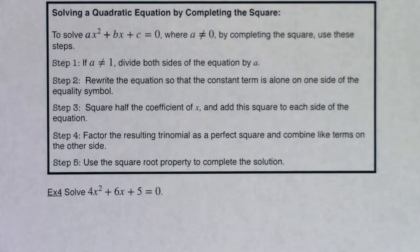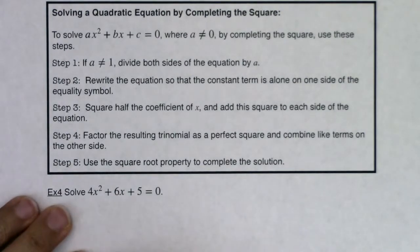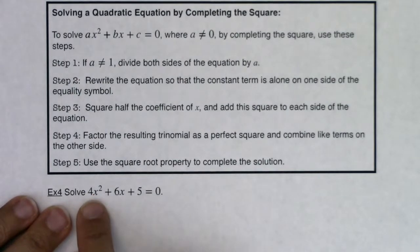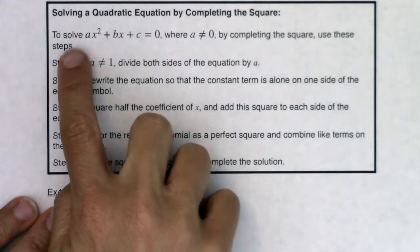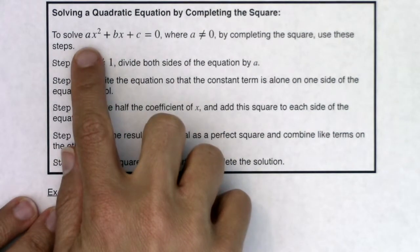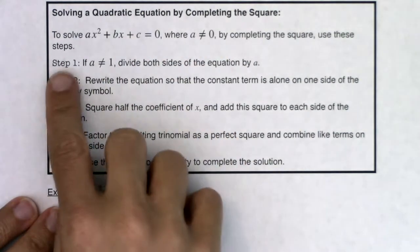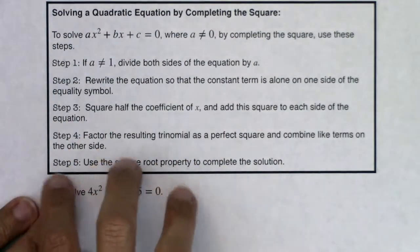Let's take a look at completing the square and how we solve a quadratic equation by completing the square with an uglier looking equation than what we saw in example 3. I want you to take note that the lead coefficient is not 1 here. So if you want to solve a quadratic equation where you have ax squared plus bx plus c equaling 0, by completing the square we're going to use these steps.